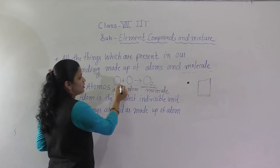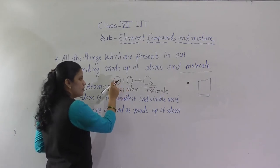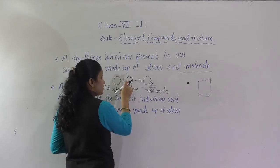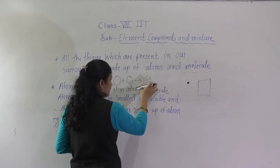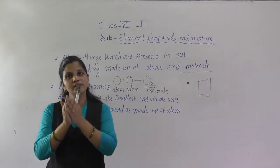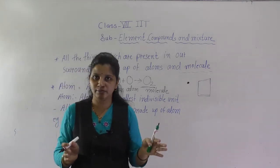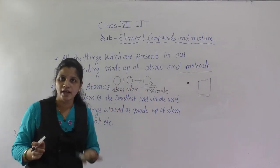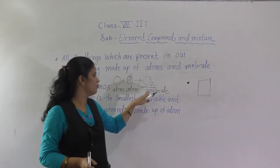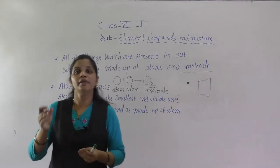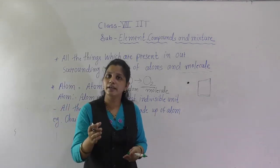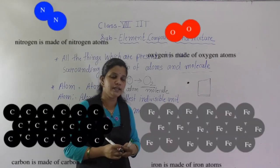Where no subscript is written, it means one atom of oxygen. Here is one atom of oxygen and here is one more atom of oxygen. When these two atoms combine, they form a molecule. So atom means a single atom of any element, and when one or more atoms combine together, they form a molecule. Write this definition in your chemistry notebook along with this example.